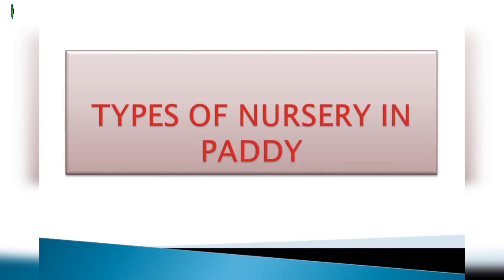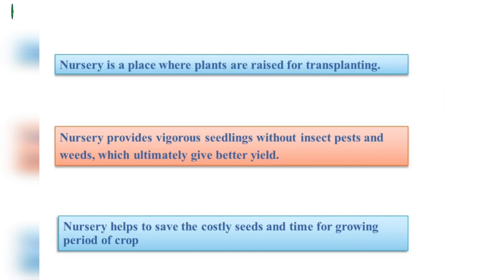Dear students, today our topic is about types of nursery in paddy. Nursery is a place where plants are raised for transplanting. Nursery provides vigorous seedlings without insect pests and weeds, which ultimately give better yield.